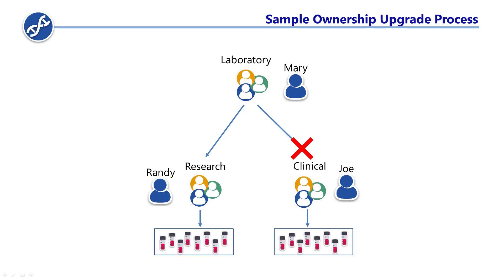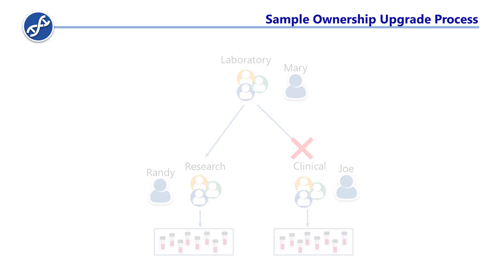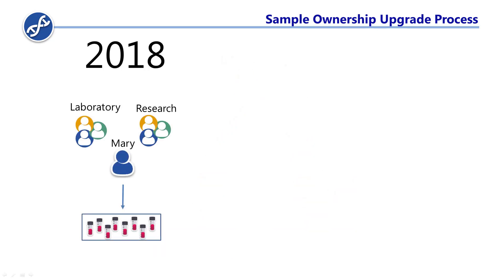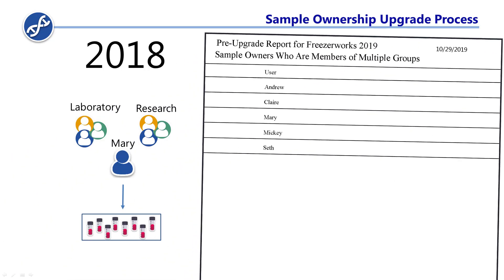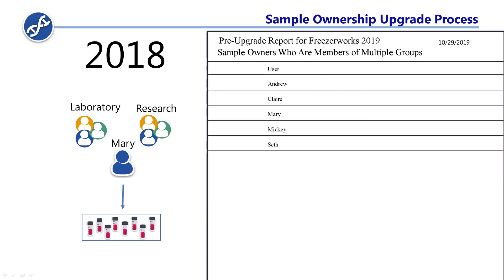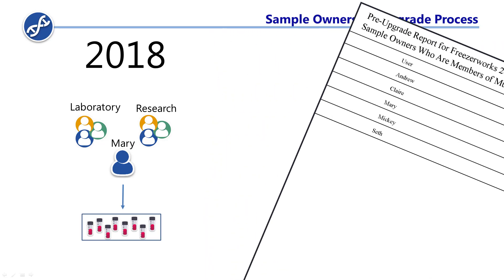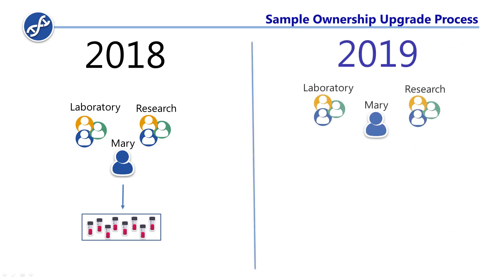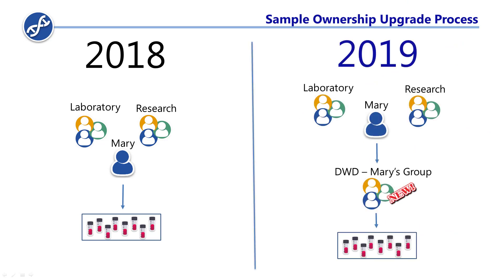Now what happens if Mary owns samples in 2018 but is also a member of multiple groups — Laboratory and Research? FreezaWorks will provide a separate report listing all of these instances during the pre-upgrade process, and if you continue with the upgrade, it will automatically create new groups to handle them. New groups will be given the prefix DWD, so you can easily tell which ones these are and rename them if you'd like.